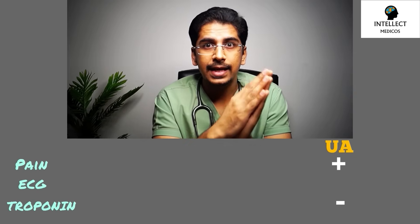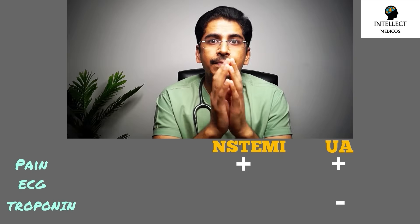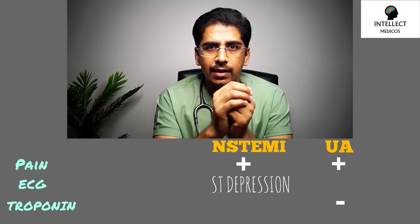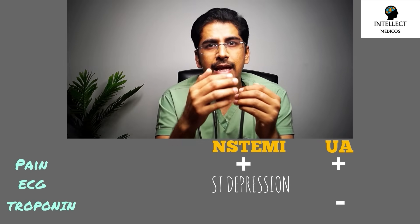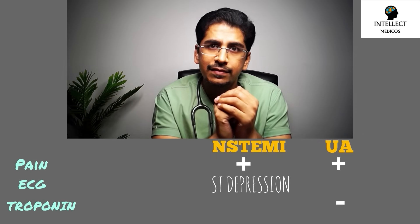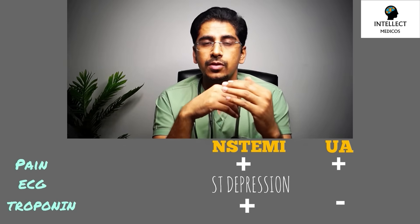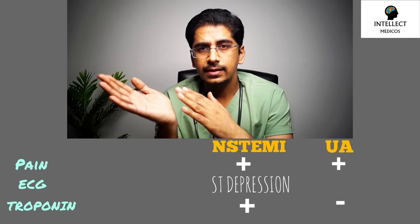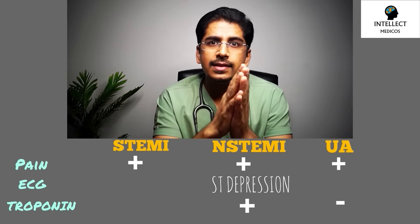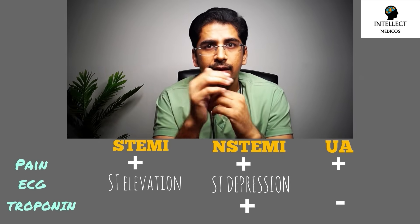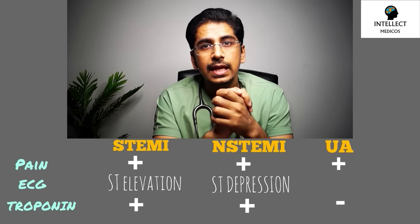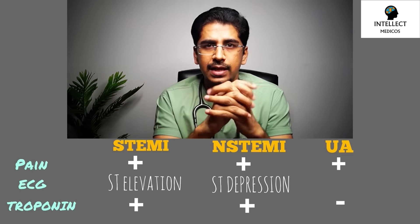To revise: in unstable angina, there is pain and possible ECG changes, but cardiac markers are negative — no troponins. In NSTEMI, there is anginal pain, ST depression with or without T wave inversion on ECG, and troponins are elevated. In STEMI, there is anginal pain, ST elevation on ECG, and troponins are definitely elevated.